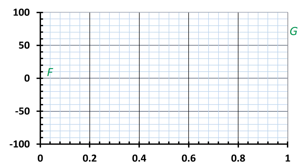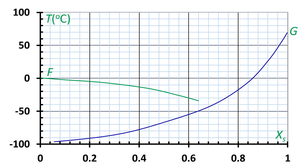First, I would like to explain the different components of the state diagram. The X-axis is the solid mass fraction, and the Y-axis is the temperature. F is the freezing curve, and it decreases with the increase of solids due to freezing point depression. G is the glass transition line and it decreases with the decrease of solids due to plasticization by water.